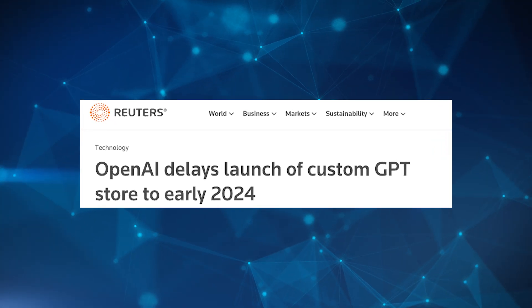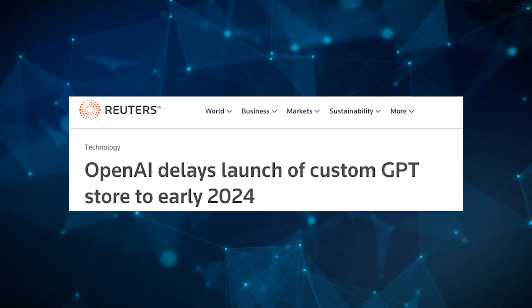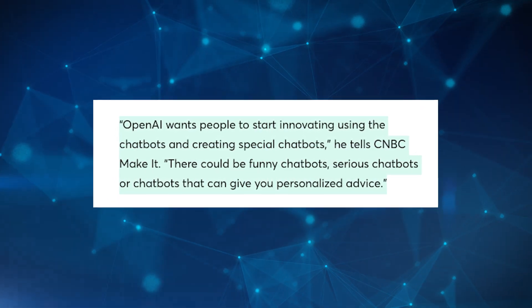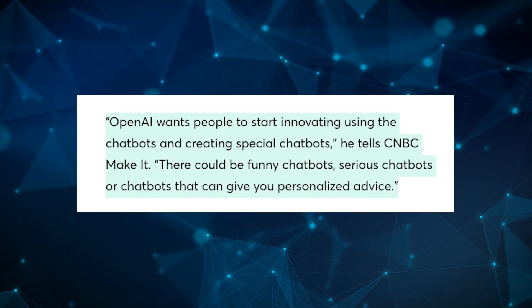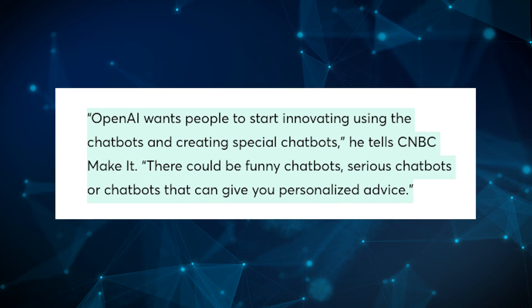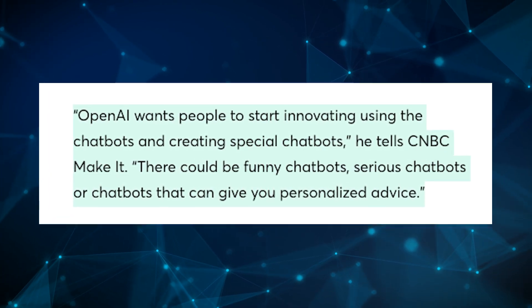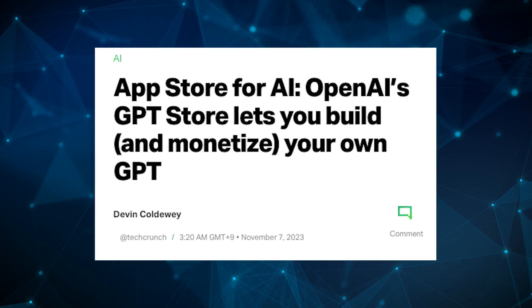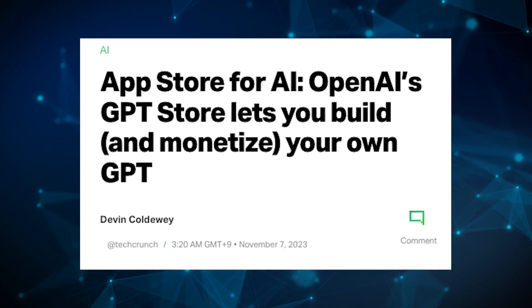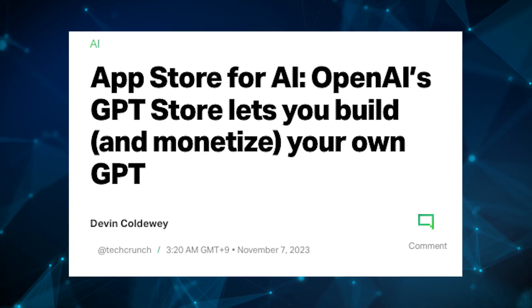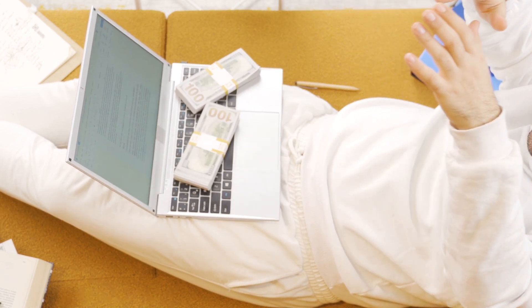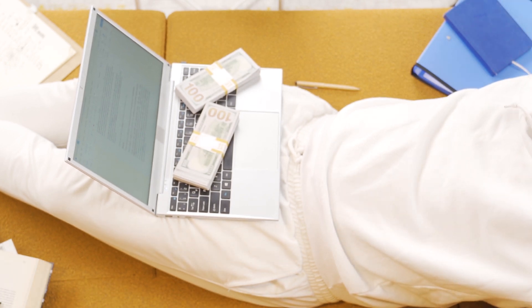In a few months, OpenAI plans to launch their GPT store, which allows creators to publish their custom GPTs and make revenue from them. As Hod Lipson, an engineering and data science professor at Columbia University, noted: OpenAI wants people to start innovating and creating special chatbots — funny chatbots, serious chatbots, or chatbots that give personalized advice. They're really trying to create a marketplace. Think of this as a modern-day app store — instead of building an entire mobile app, you can create things in just a few steps and potentially make passive income. Over the coming months, builders will be able to earn money based on the number of users using their chatbot.